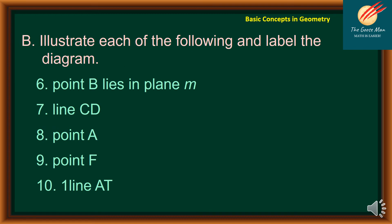Let's move on to the second exercise. That is illustrate each of the following and label the diagram. So let's try to illustrate. Point B lies in plane N. So we have actually plane N. This is represented by a slanted figure. Plane N, and the point B lies on plane N. So we can write here point B.